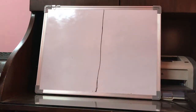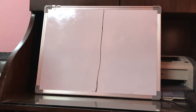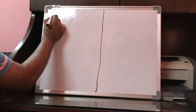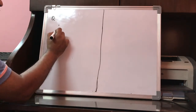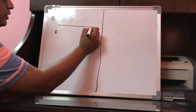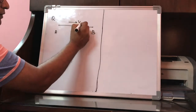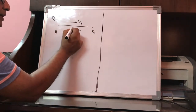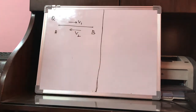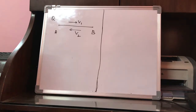Let us consider a very important example on average speed, which is asked in school examinations and many competitive examinations. The question says that a car goes from city A to city B with speed v1, and then comes back from city B to city A with speed v2. What is the average speed for the whole journey from A to B and B to A?